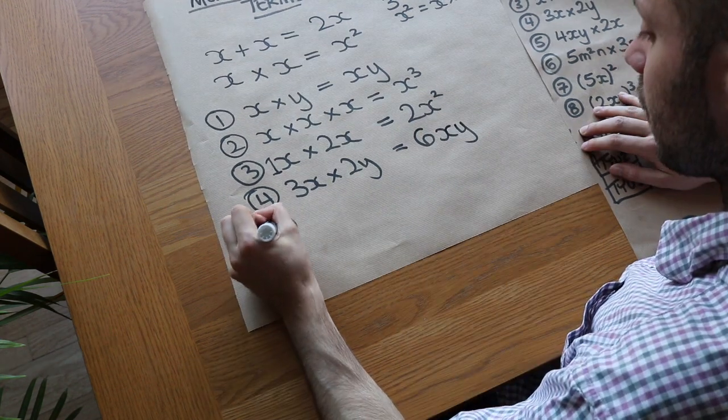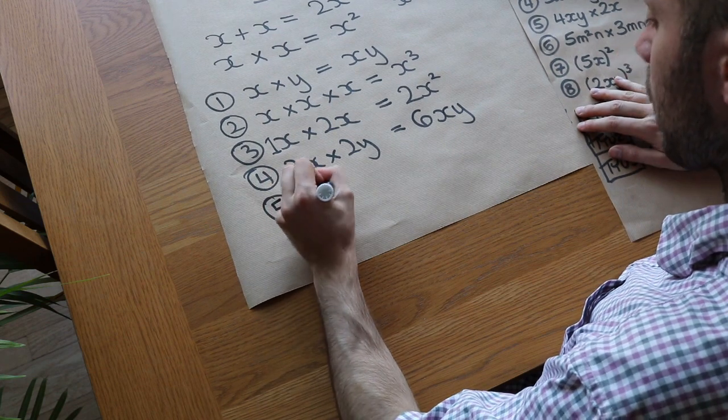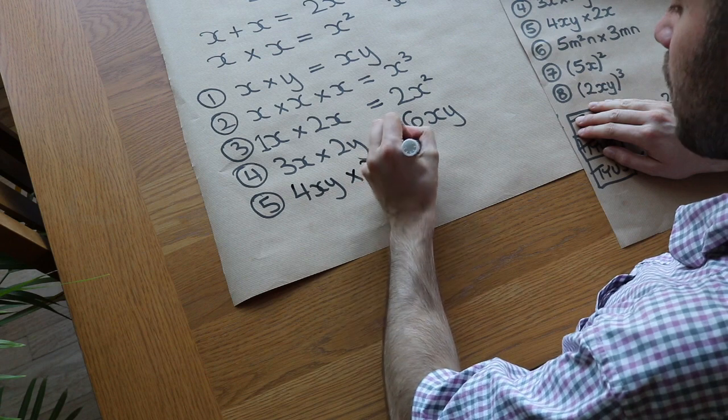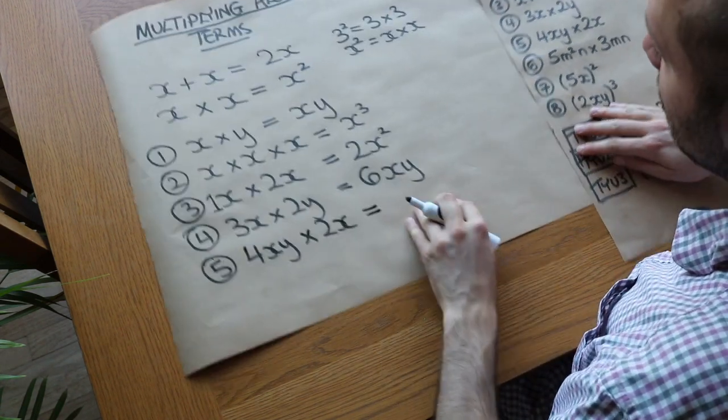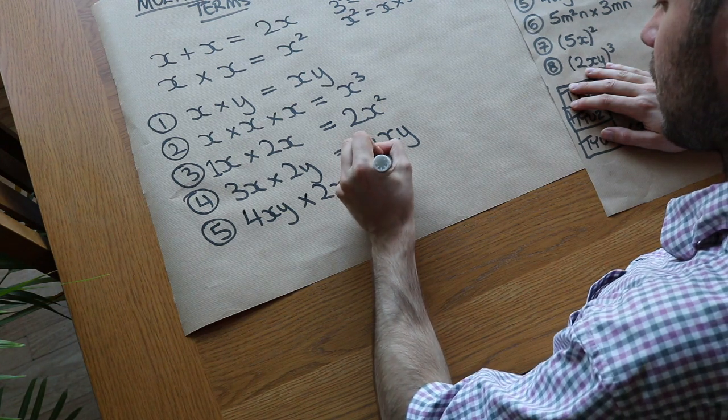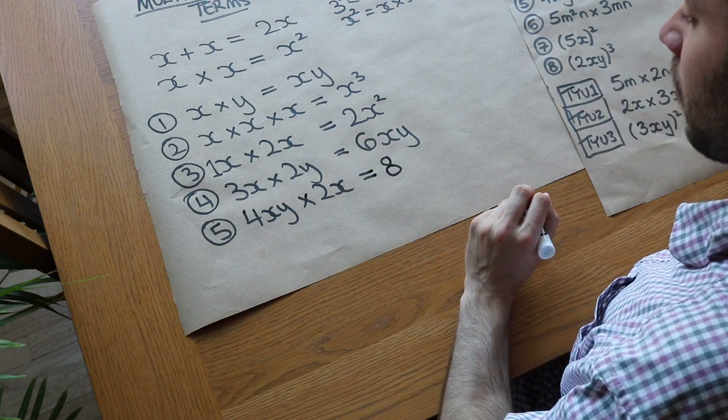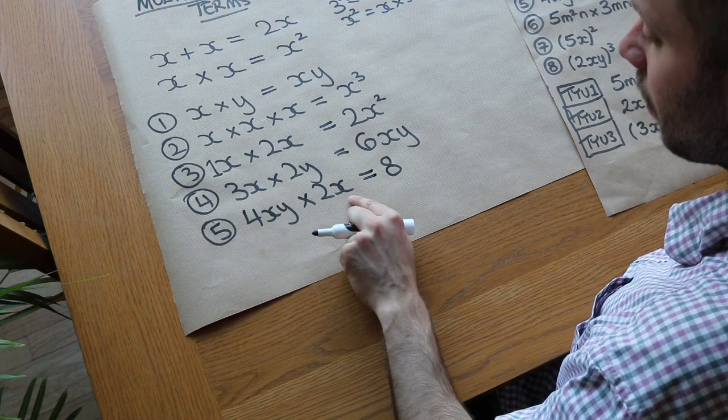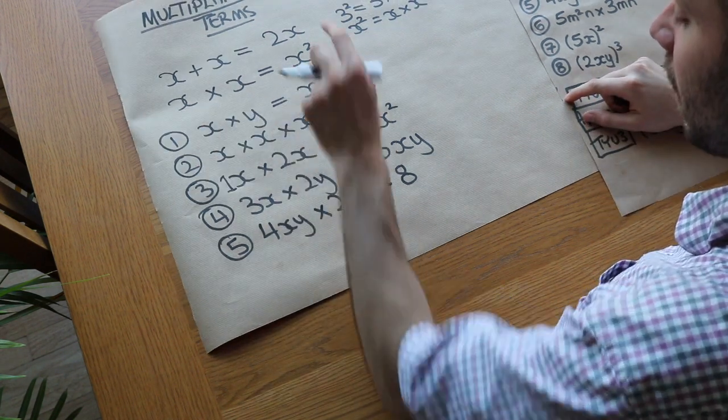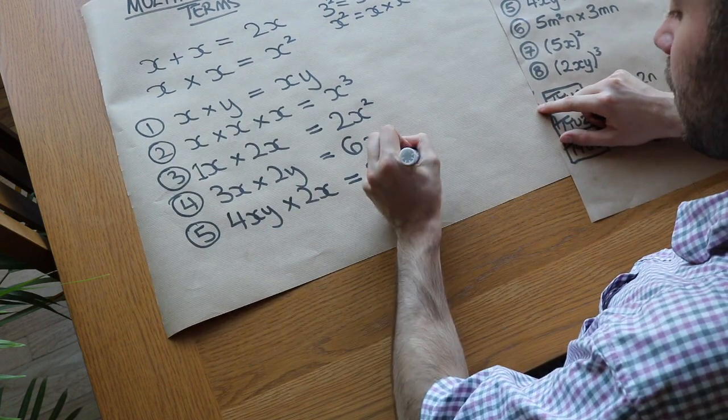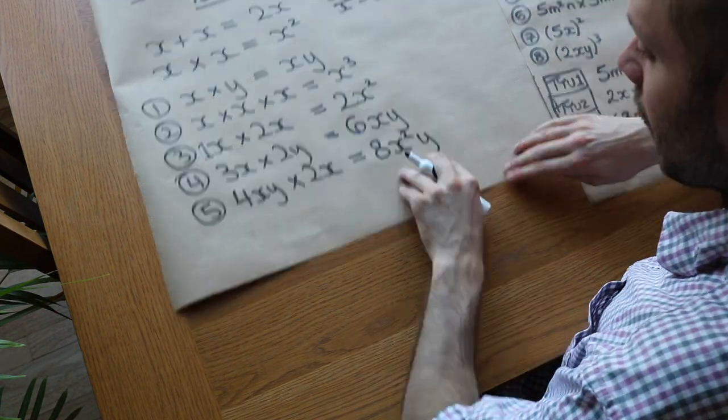Question number five. We've got 4xy multiplied by 2x. Now, this is starting to get a bit harder. Again, we always start with the numbers. So we've got 4 times 2, which is 8. And then let's look at the variables in alphabetical order. We've first got the x's. We've got x times x, which we know from earlier is x squared. And then we've just got a single y, so we're going to put y.